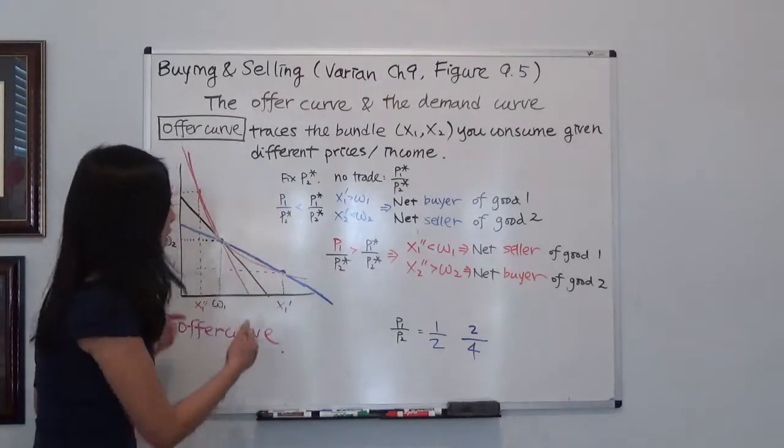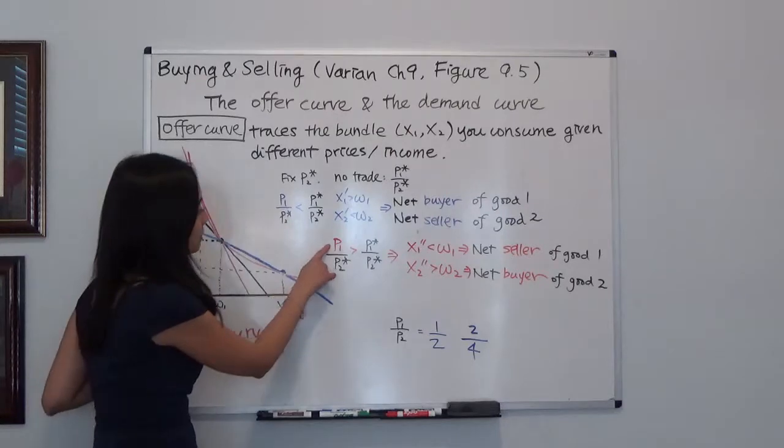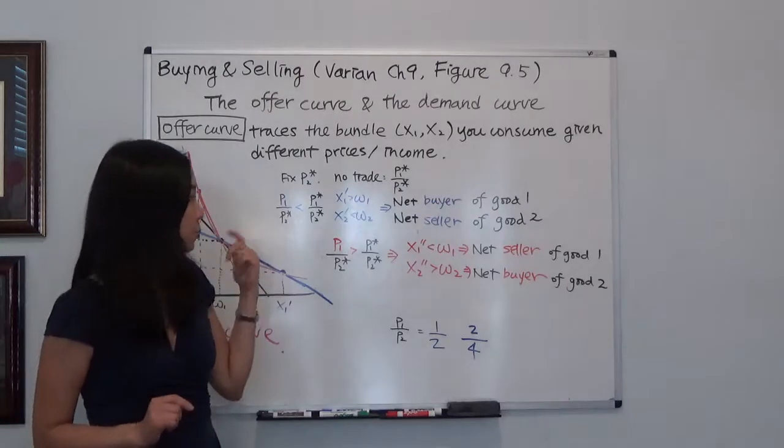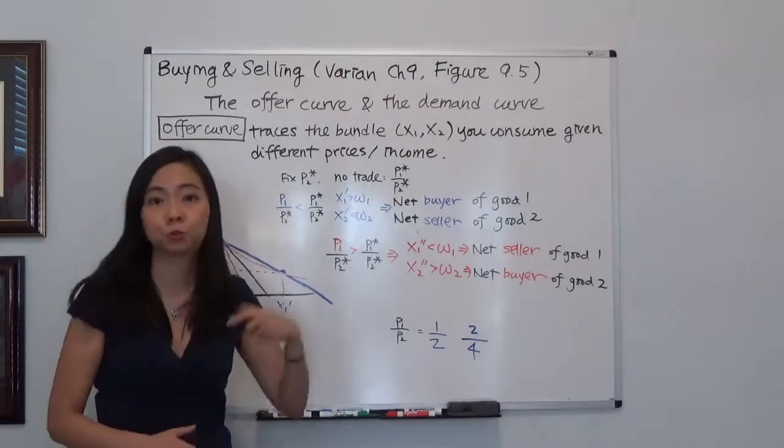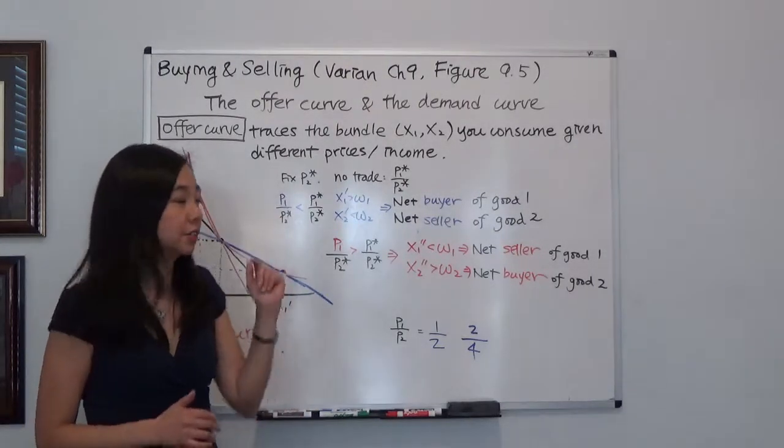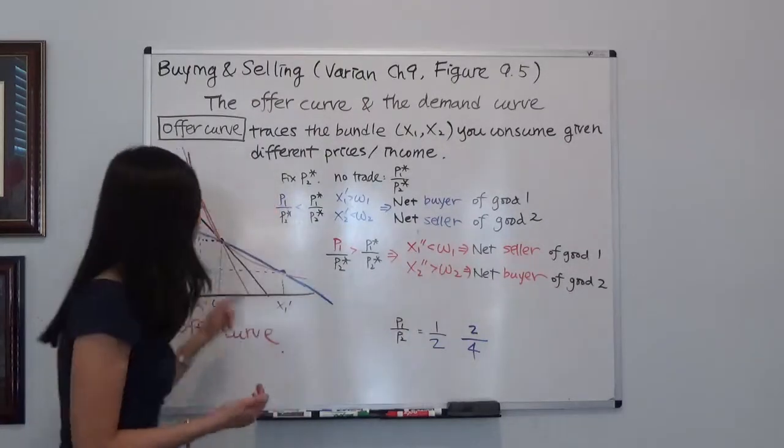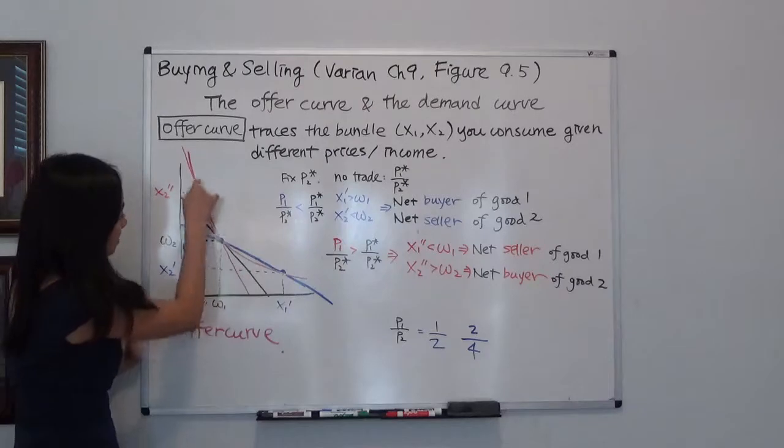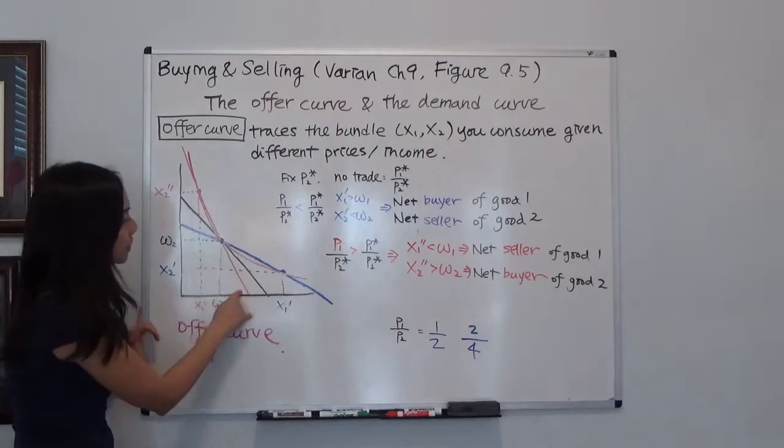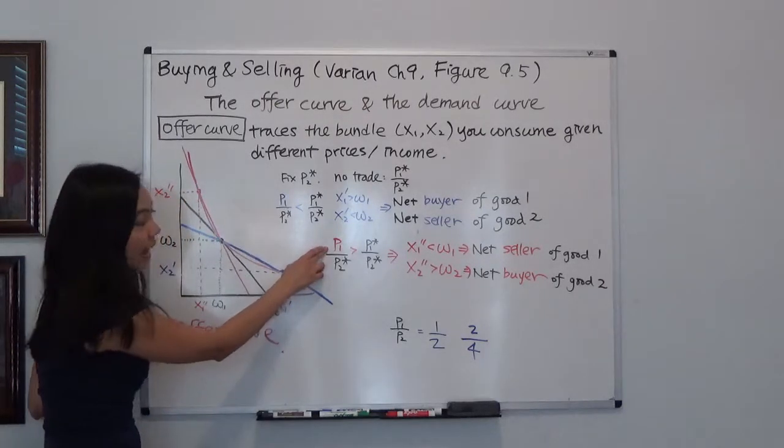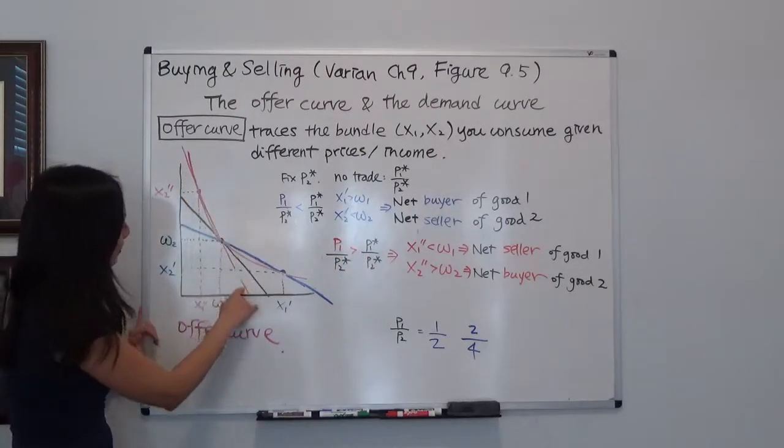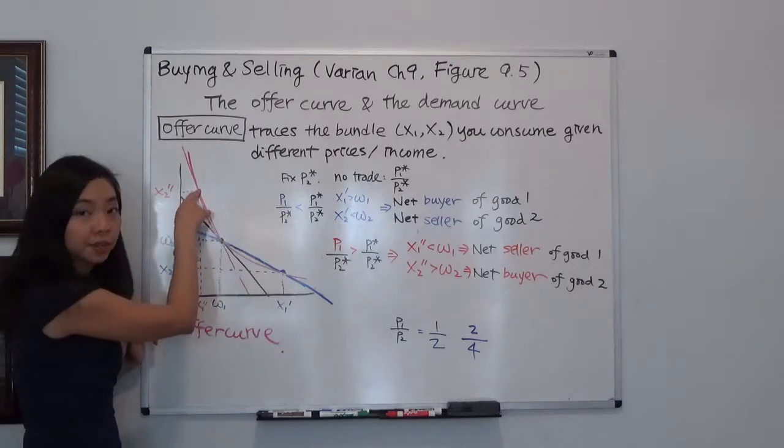Now what happens if the price of good 1 goes up so that P1 is higher than P1 star? In that case, the price of good 1 has gone up, so it makes sense to sell it, and relatively the price of good 2 has gone down, so it makes sense to buy it. You can see the new budget line is this red line. Notice it still goes through your original endowment, it's just steeper. Why? Because P1 is now relatively higher than the previous price P1 star. So the budget line becomes steeper and this is your new consumption bundle.